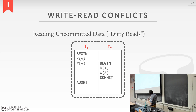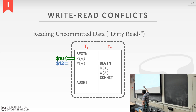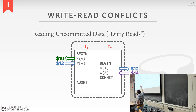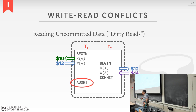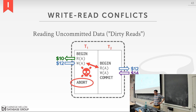A write-read conflict is called a dirty read — reading uncommitted data. T1 reads A ($10), writes $12 to A; context switch to T2, which reads A ($12, the uncommitted write from T1), writes $14, and commits. But then T1 aborts and must roll back its write on A. The problem is T2 already read that uncommitted value and committed, telling the outside world A equals $12. That was dirty data — data that was not yet committed.